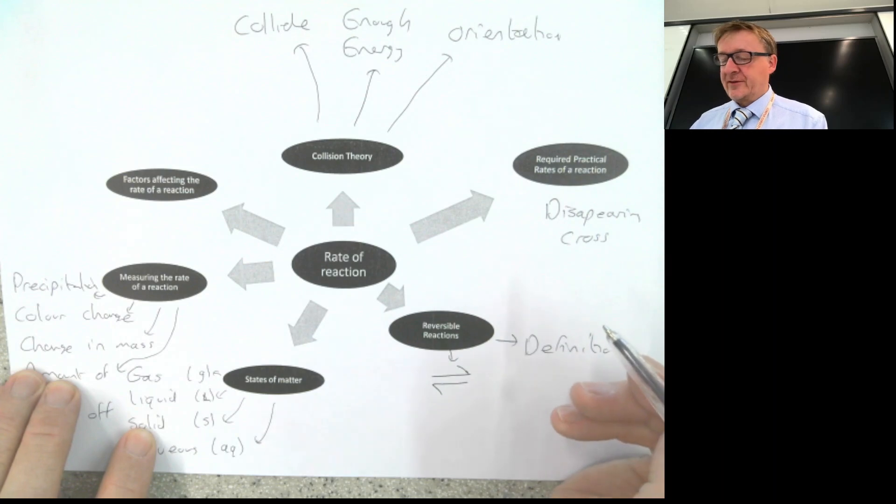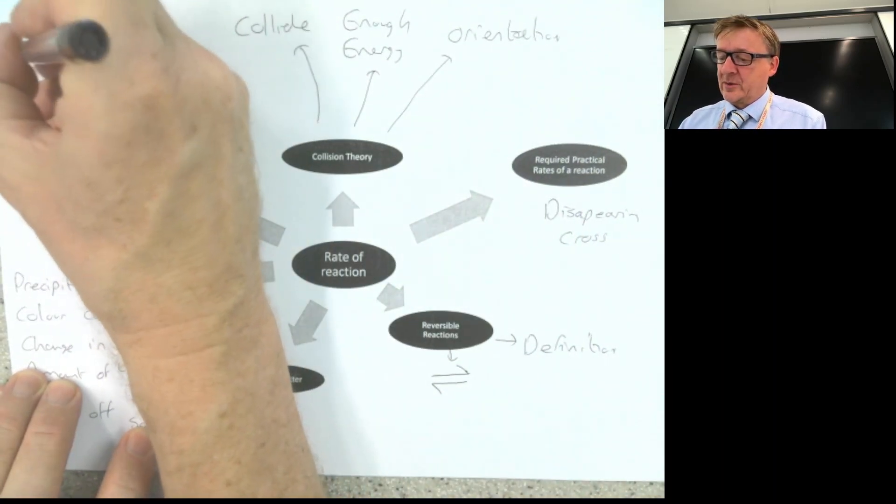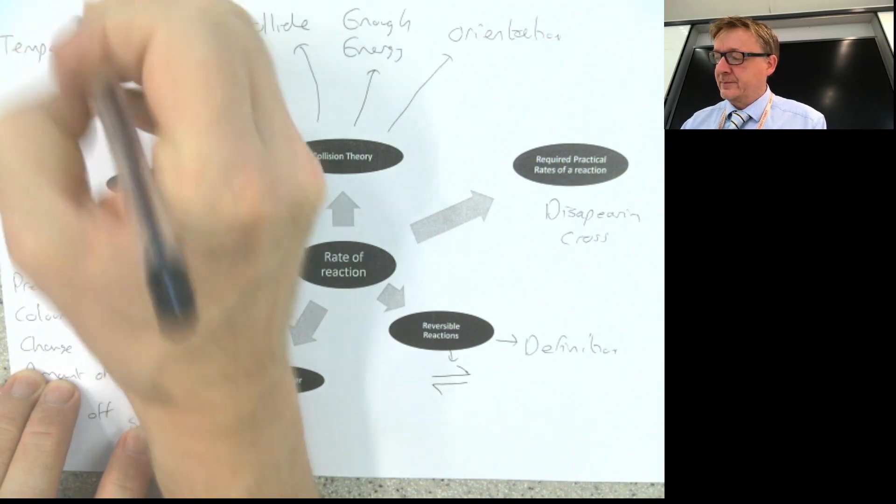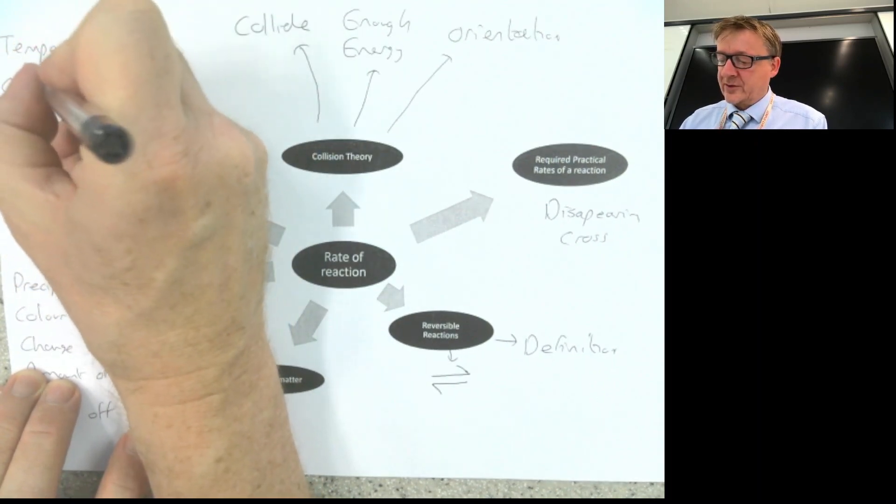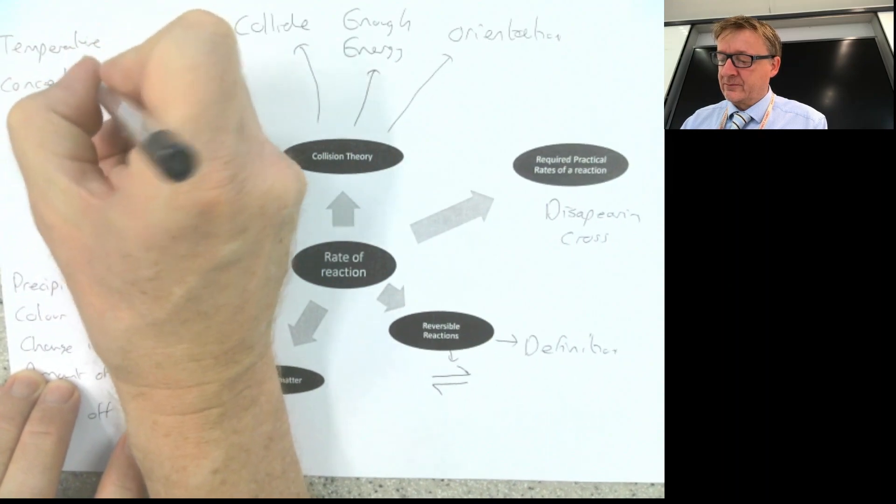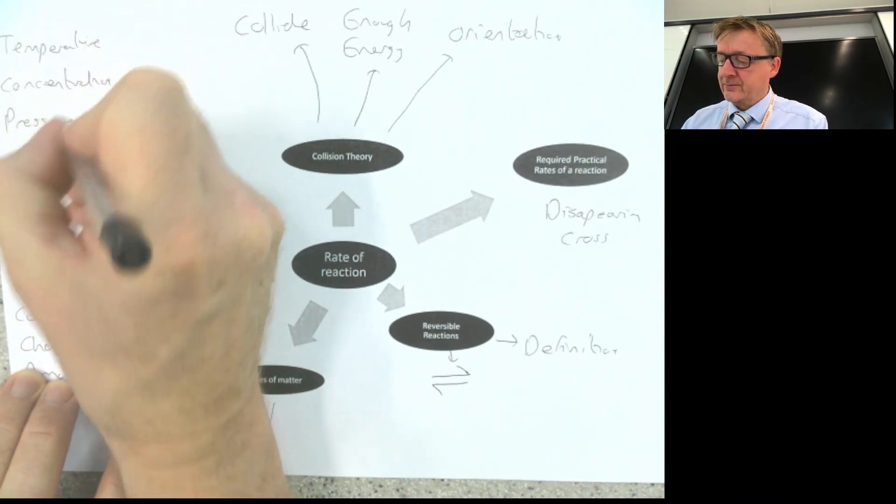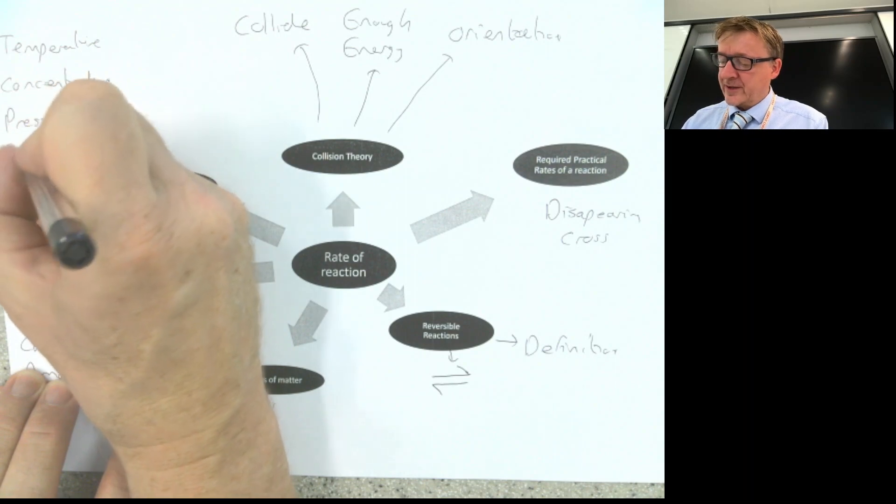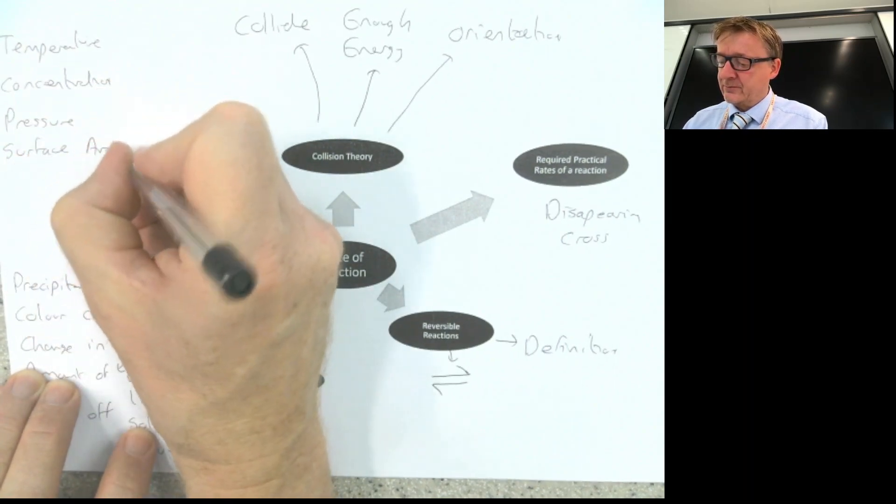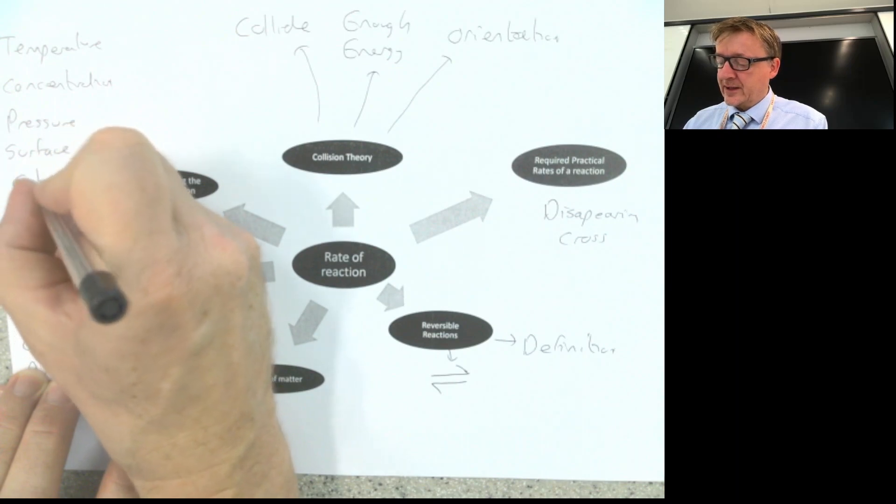Factors affecting the rate of a reaction. This is absolutely vital. You need to know these. We've got temperature. We've got concentration. We've got pressure. We've got surface area. And we've got a catalyst.